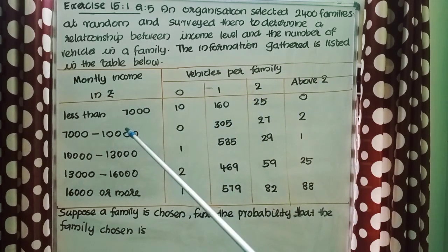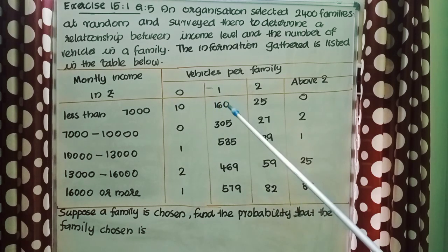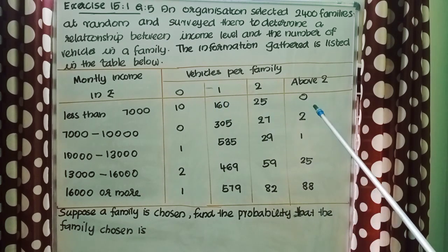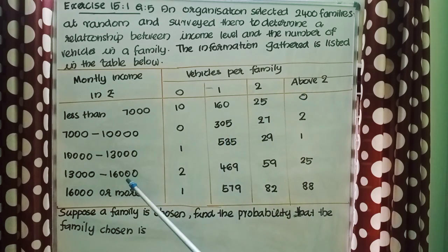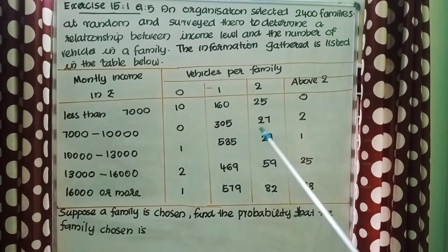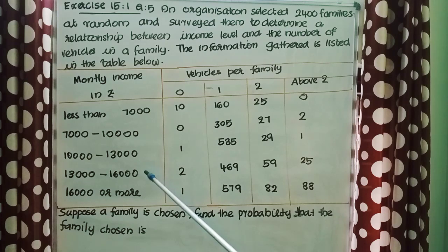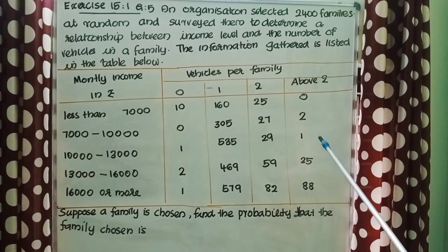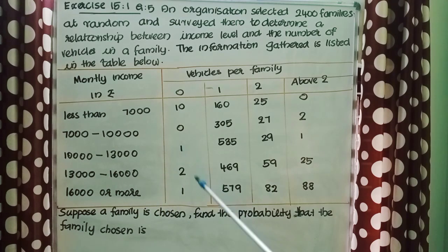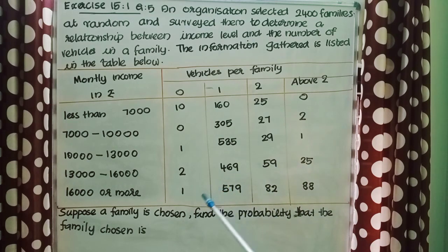For income 7,000–10,000: 0, 305, 27, 2 families. For income 10,000–13,000: 1, 535, 29, 1 families. For income 13,000–16,000: 2, 469, 59, 25 families. For income 16,000 or more: 1, 579, 82, 88 families. Suppose a family is chosen at random.